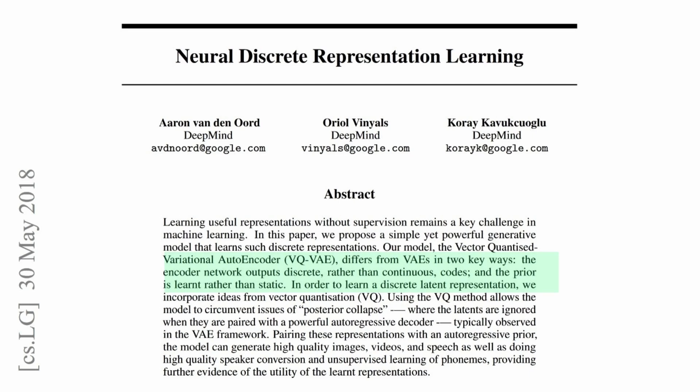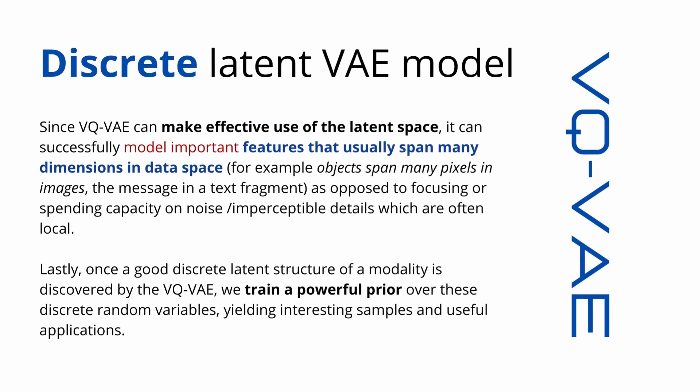Have a look at this paper — it is highly interesting. In summary, our vector quantization model, also called the discrete latent variational autoencoder, makes efficient use of the latent space in a very particular way. A lot of people miss that this is the crucial element of distinction. It can successfully model important features that normally span multiple dimensions in the data space — for example, objects spanning many pixels in an image — in a less dimensional representation, without losing capacity or imperceptible details that are often just local.